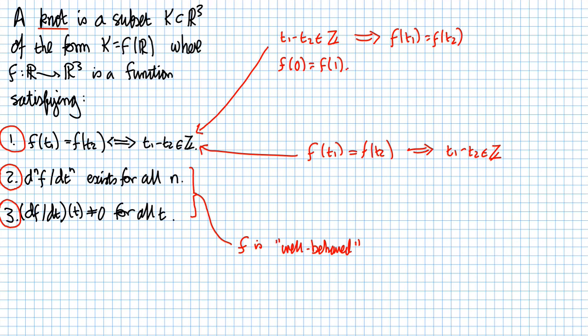And indeed, the condition here tells me that F of T for any T is the same as F of T plus 1. So that if I continue, if I go from 0 to 1 and pass 1 and continue, then what I'm doing is I'm just wrapping around the same curve over and over again. So this condition tells me that F of R is a closed curve in R³.